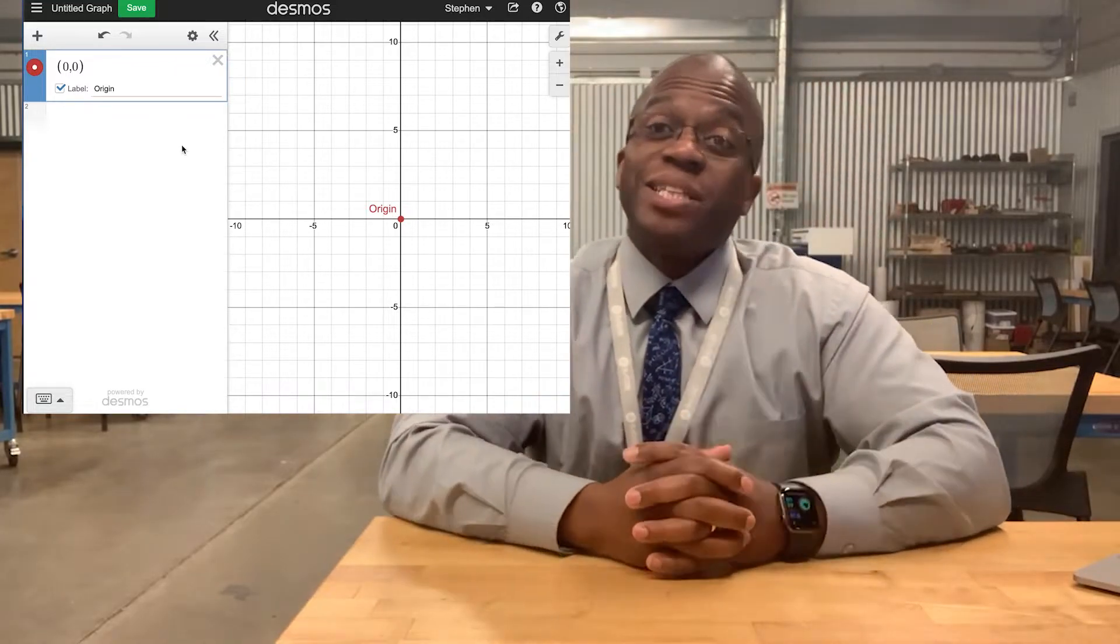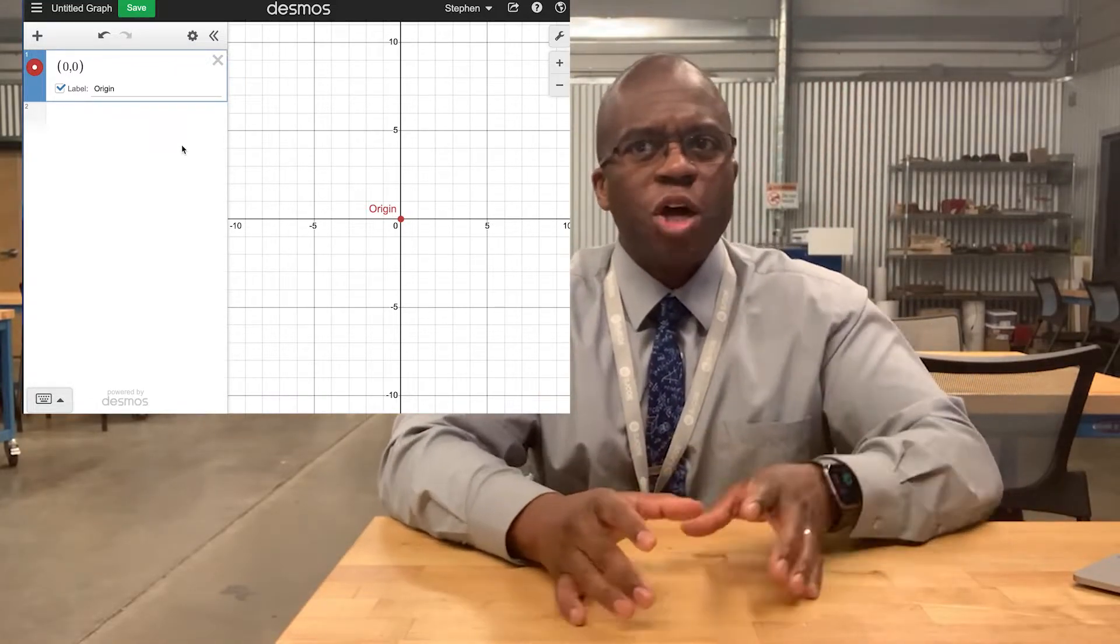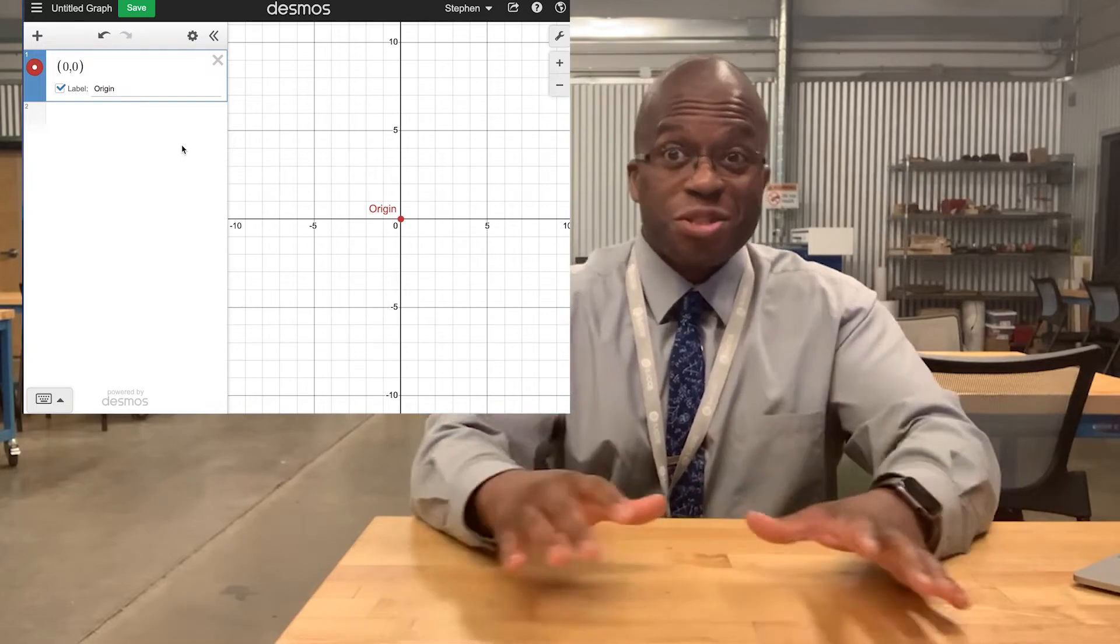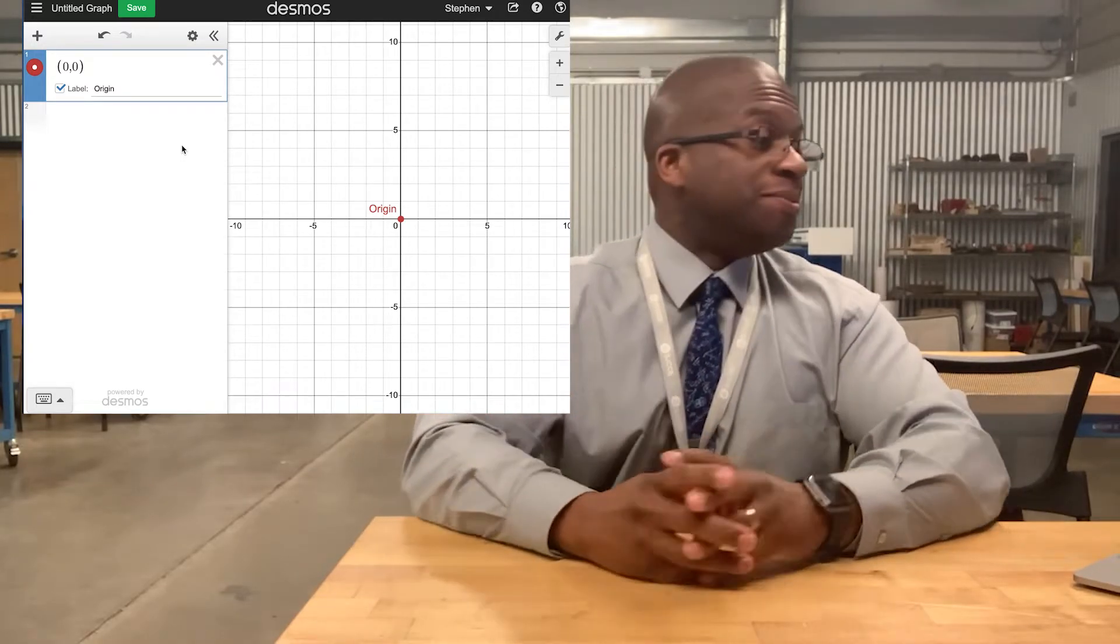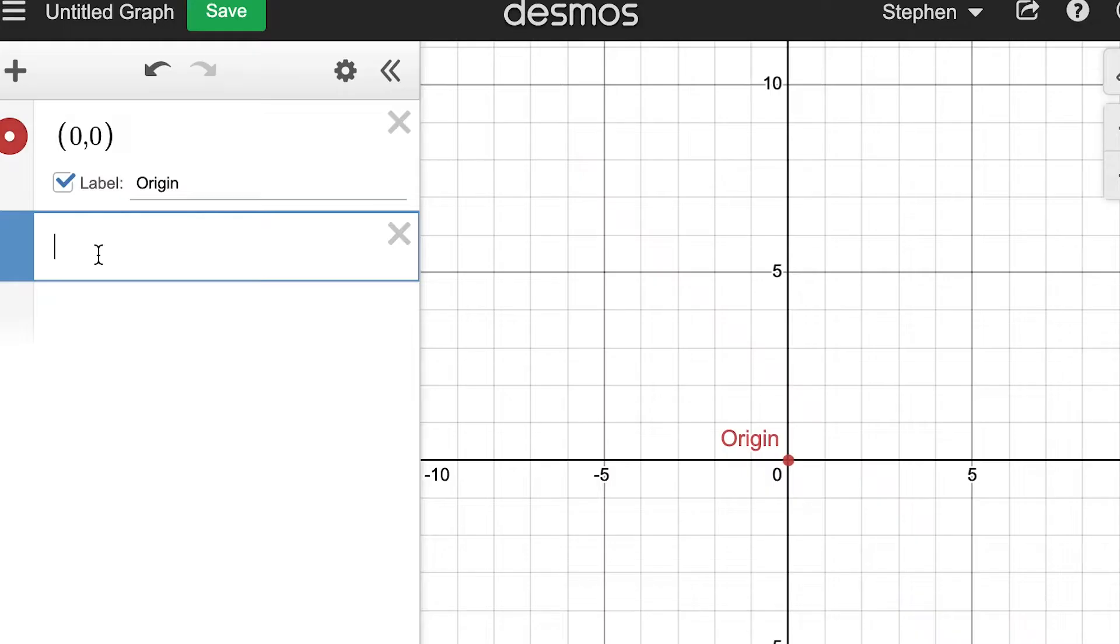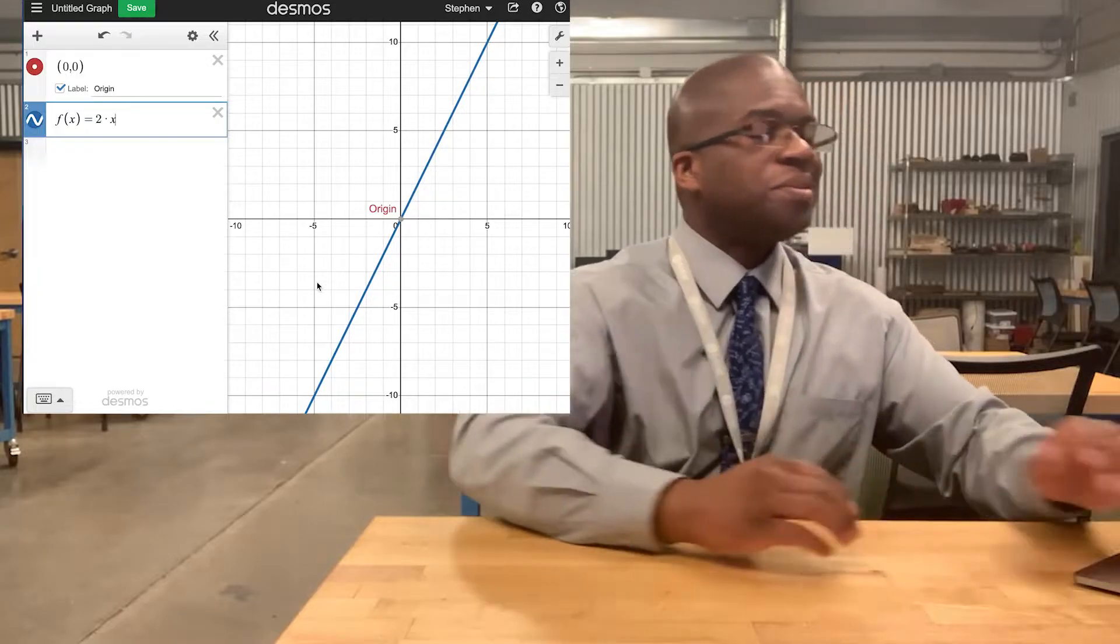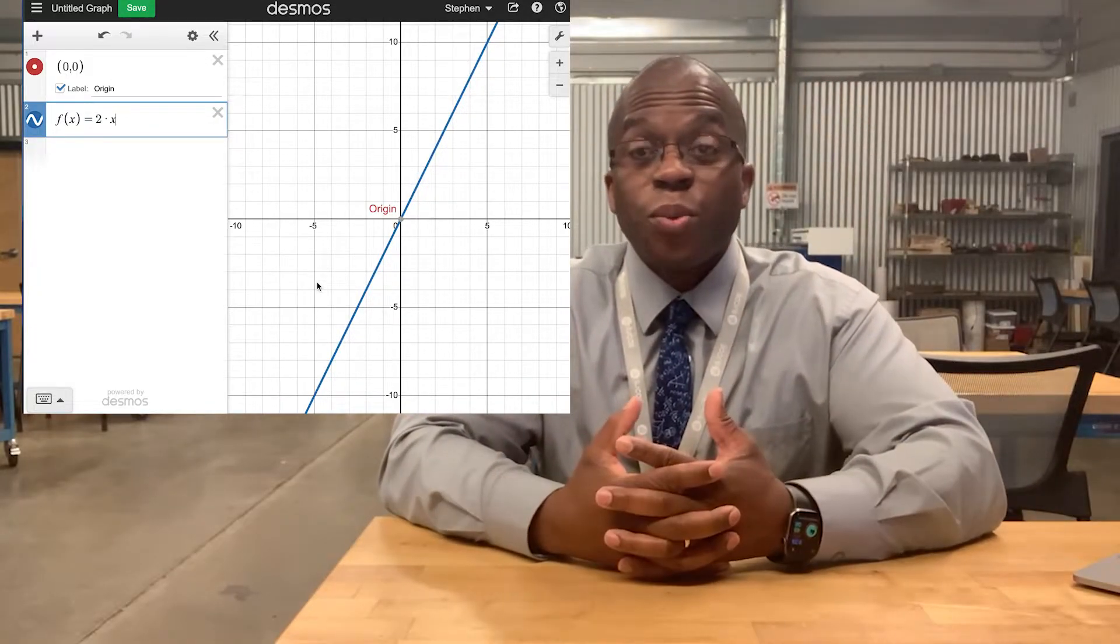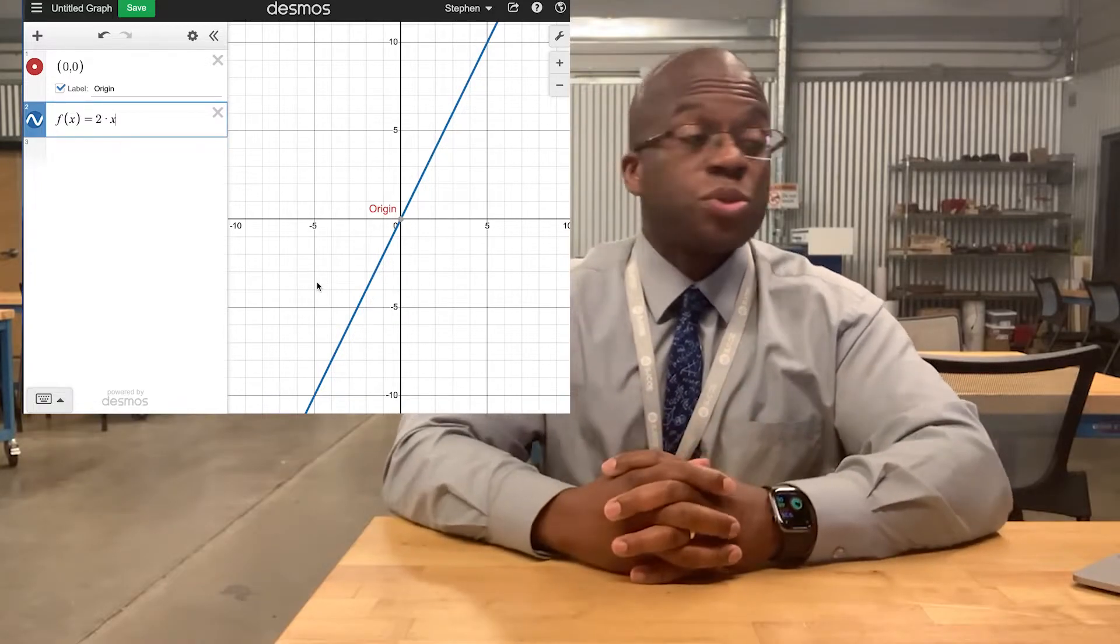Notice I can add a label. That can really help if we're trying to represent some information, we want others to be able to understand it. I could also, let's try writing a function. Oh, there we go. So we have a line of y equals 2x.